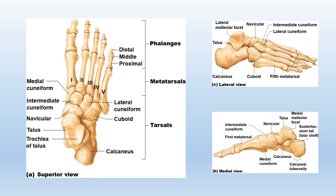This was chapter 7 part 3, where we covered the appendicular skeleton — addressing the pectoral and pelvic girdles as well as all of the bones of the upper and lower limbs.